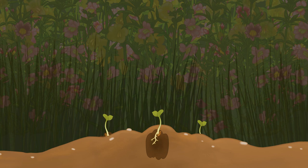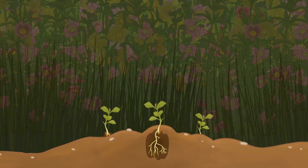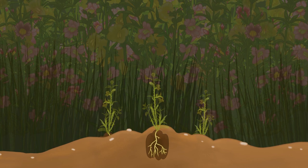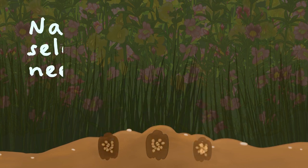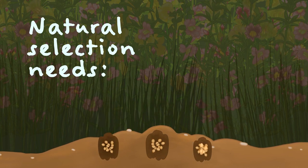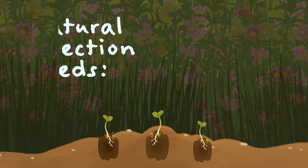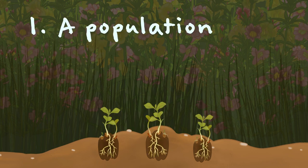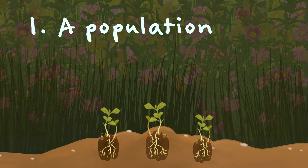This video will dig into how it happens. For natural selection to occur, you need three things. One, you need a population — a group of individuals of the same species that can reproduce together.